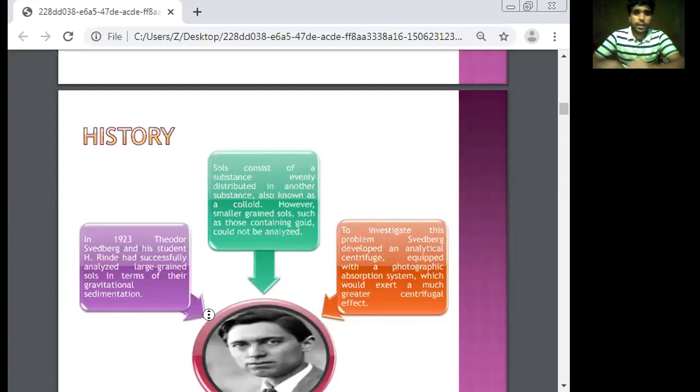Okay, this is history. In 1923, Theodore Svedberg as a student successfully analyzed large molecules by their gravitational sedimentation. In 1923, these two scientists had first time seen that large molecules settle under gravity. So constant substance evenly distributed in another substance is known as colloid. When two molecules are together, one molecule is colloid.